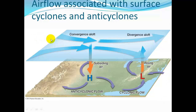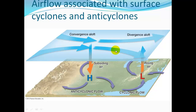High above we have our geostrophic winds. When they pass over the high pressure, the air wants to subside and cycle around in anticyclonic flow. When the air passes over low pressure, there's rising air — it diverges and pushes the winds apart as it rises up.